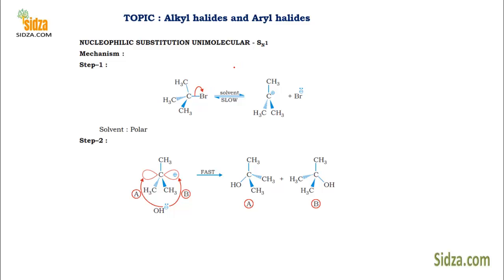In an SN1 nucleophilic substitution reaction, first the bromine is replaced and you get a carbocation — halogen is lost as Br⁻, and the carbocation is the first intermediate. The carbocation is planar because of sp2 hybridization, so the three groups attached to it are all in one plane. In the next step, the nucleophile may attack on the front side or the back side — 50-50 chances. If it attacks from exactly the same position where bromine was, you get retention of configuration.